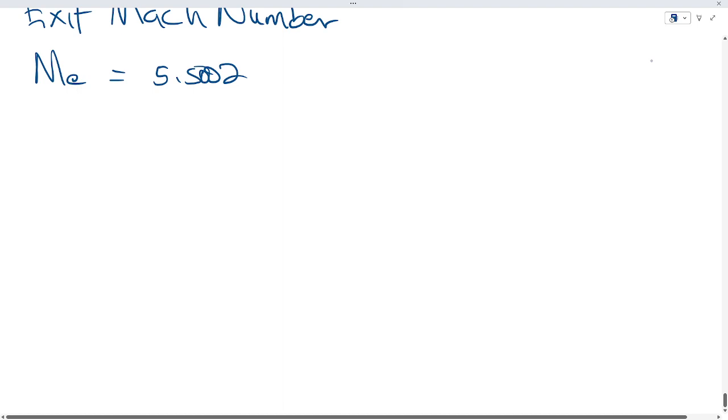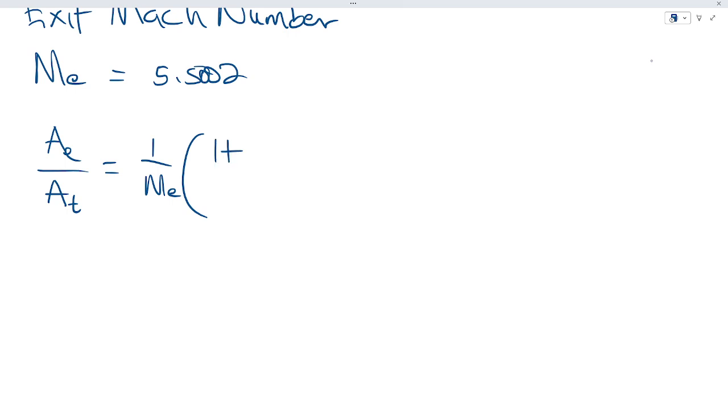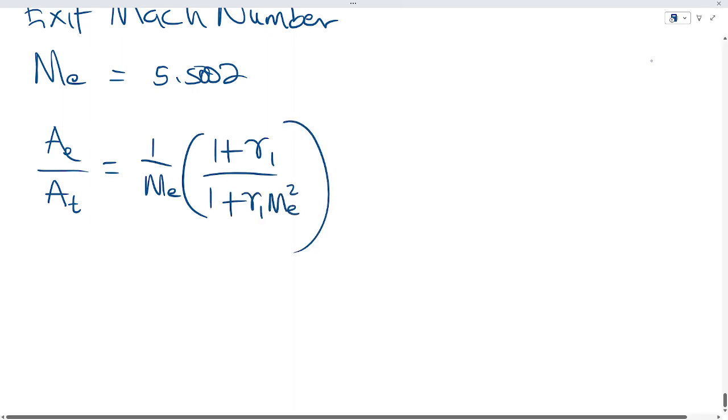Let us recall from the previous equation we have: area of the exit to the area of the throat equals one over Me, one plus gamma one, over one plus gamma one Me squared, to the power of one over gamma minus one minus half.